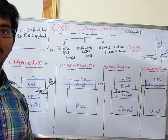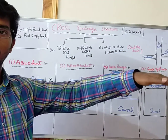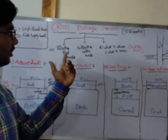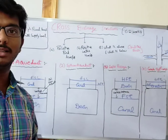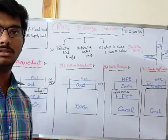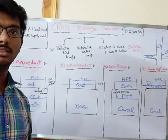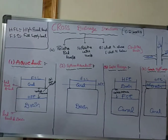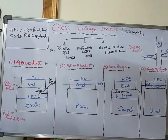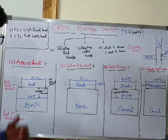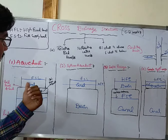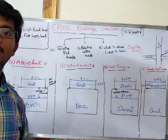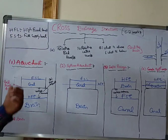The third consideration is what is above and what is below — whether the canal is flowing above the drain, or the drain is flowing above the canal. Based on these three things, we can differentiate cross-drain structures into four types: Aqueduct, Siphon Aqueduct, Super Passage, and Canal Siphon.